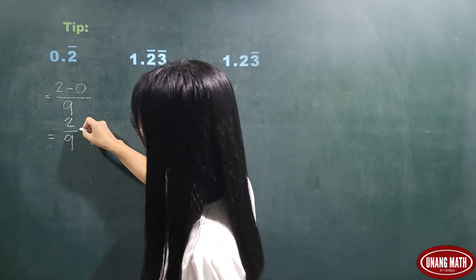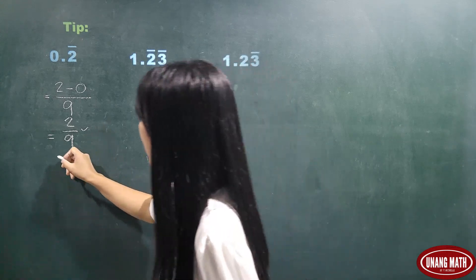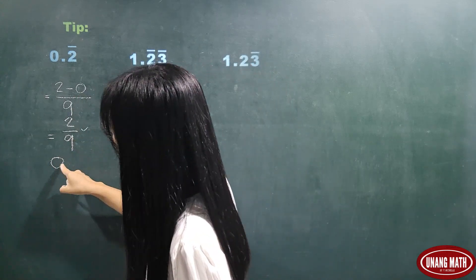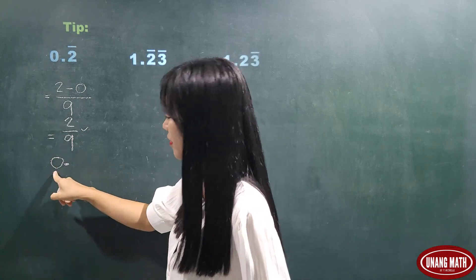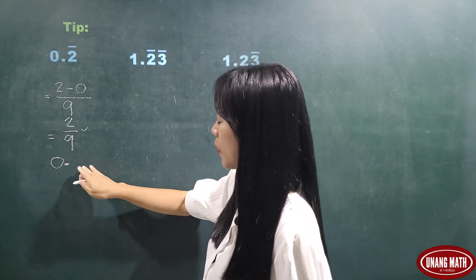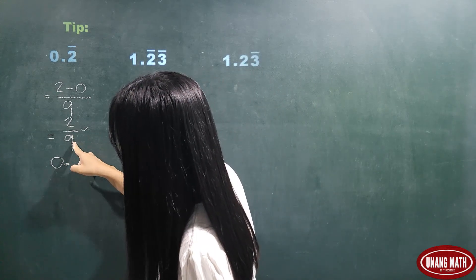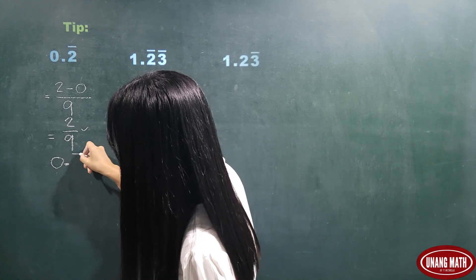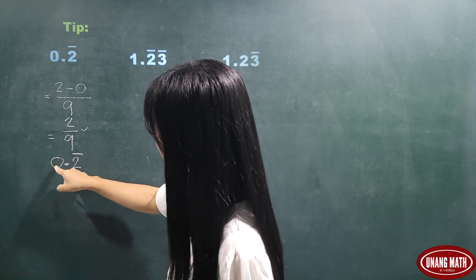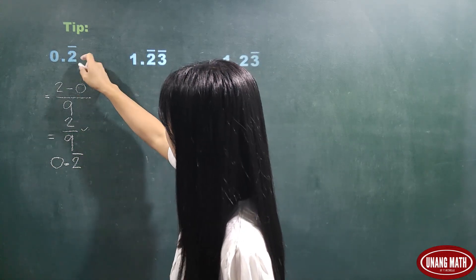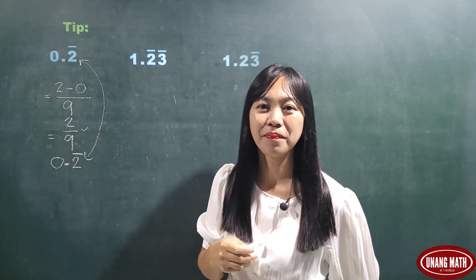So this is 2 minus 0, giving us the fraction 2 over 9. If we check: 2 is smaller than 9, so the number to the left of the decimal point is 0. Since 9 is the repeating digit indicator, and the numerator gives us 2, the decimal part is 0.2 repeating — which matches our original number.